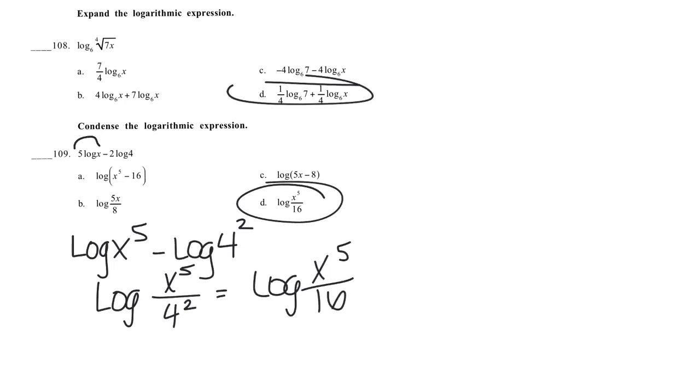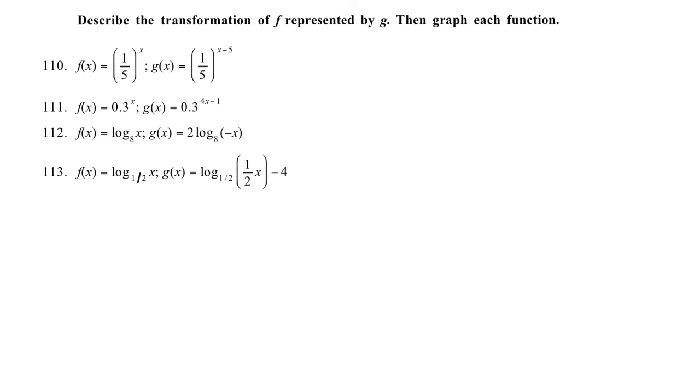And the last four problems, describe the transformation and then graph. We're just going to describe the transformation right now. This parent graph is 1/5 to the x. When I subtract 5 in the top, that's a horizontal translation right 5.